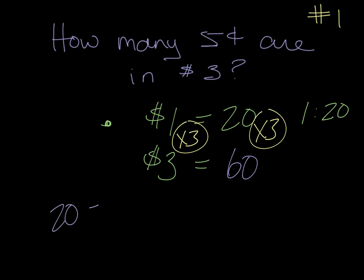Every twenty nickels gives me a dollar. So forty nickels would give me two dollars. Sixty nickels would give me three dollars.